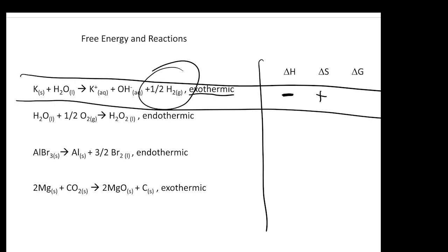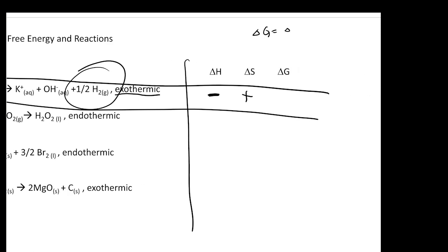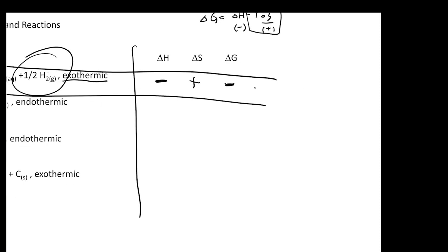For the first example: ΔG = ΔH - TΔS. ΔH is negative and ΔS is positive, making the second term also negative. Therefore ΔG will always be negative — the reaction is spontaneous at all temperatures.